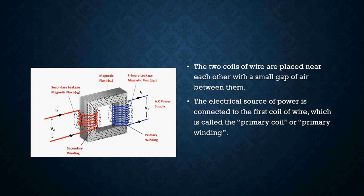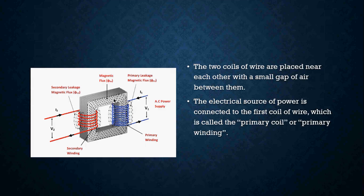When we look at a transformer, you're going to see a couple of wires sticking out on both ends. You're also going to see a magnetic or iron core — a piece of iron — kind of wrapped around, as we see here in this animation. Those two coils of wire are placed close together, but they are not touching in any way. There's just a small gap of air in between those two.